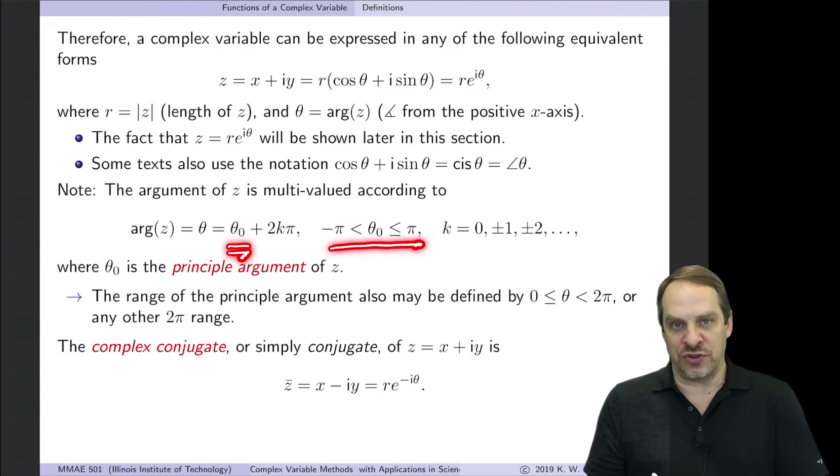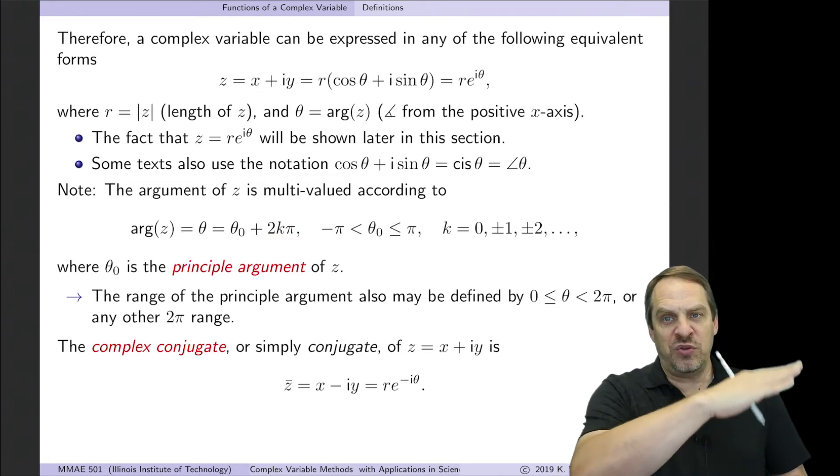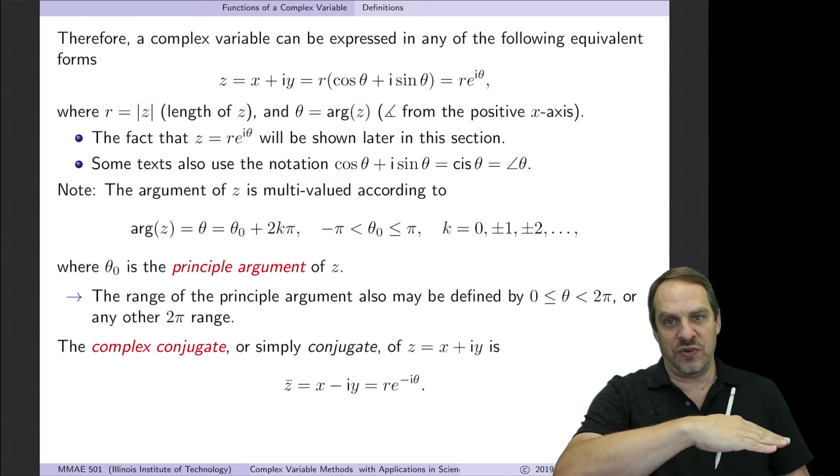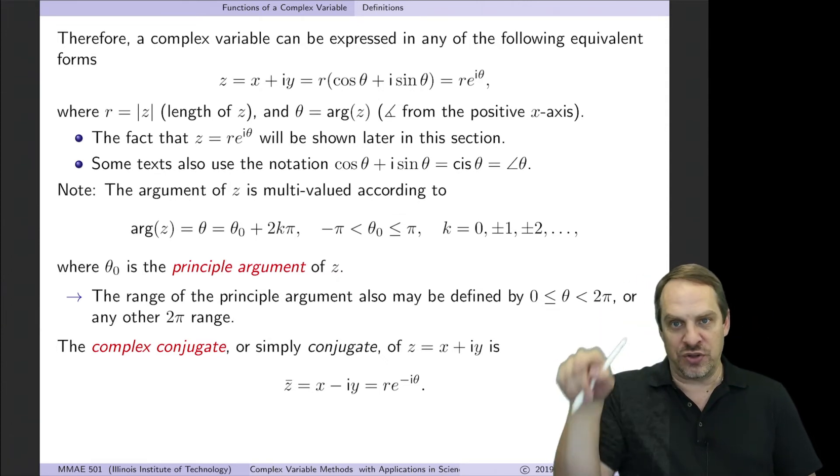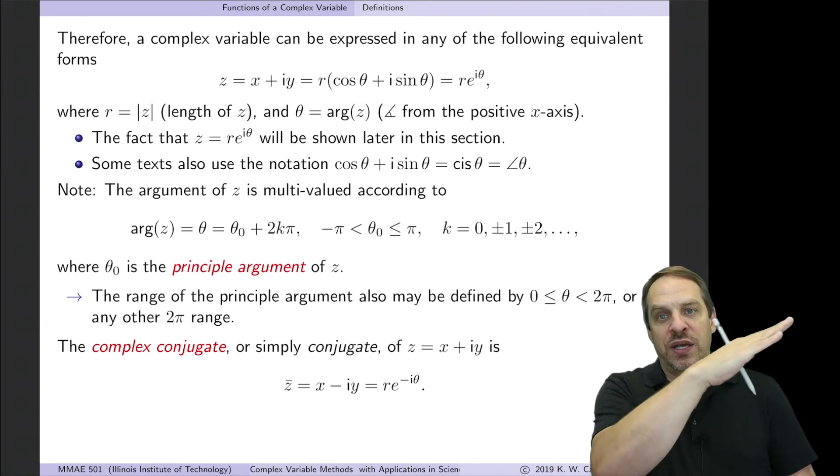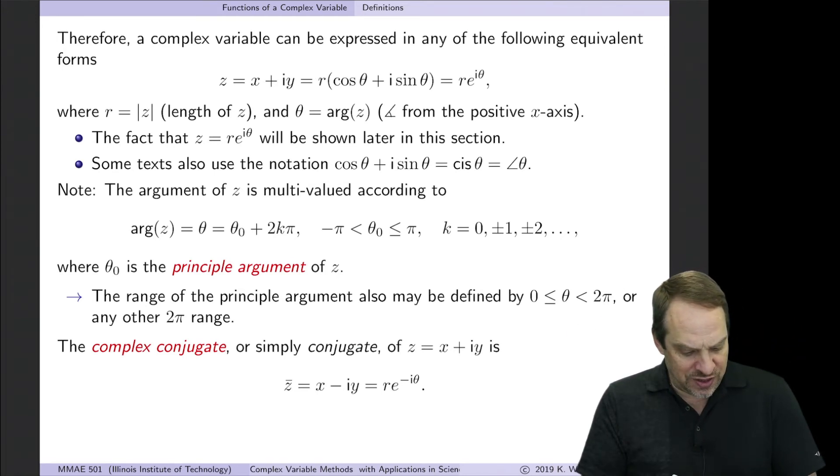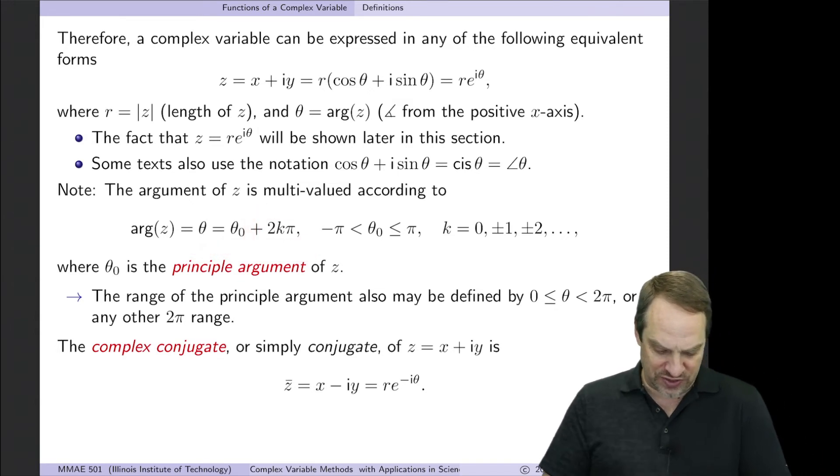So that's a number between, say, minus pi and pi, or zero and two pi. It's just some two pi range. And add to that, then, two k pi, where k is an integer. In other words, if I have a point in the Z plane, I have a theta zero, the angle from the positive real axis to that location. But I can go around two pi and another two pi and another two pi, and I end up at the same place. So theta is theta zero, the principal argument, plus two k pi. And so we're going to have to keep that in mind and be aware of that and take that into account as necessary.